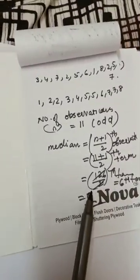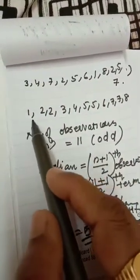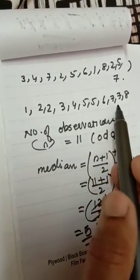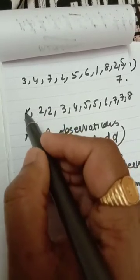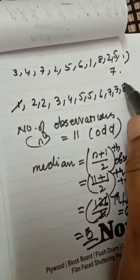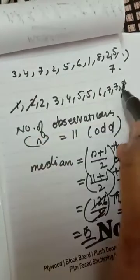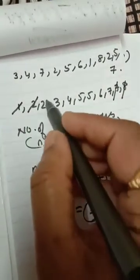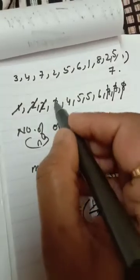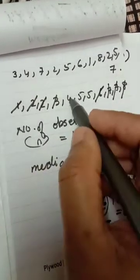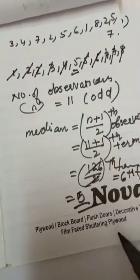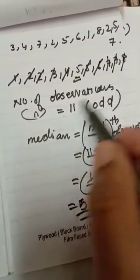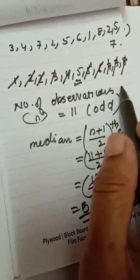Now the easy method. After arranging the data in ascending order, you cut the first and last, then the second and second last, then third and third last, and so on. Whatever is left out in the middle — that is your median. This easy method you can also follow.